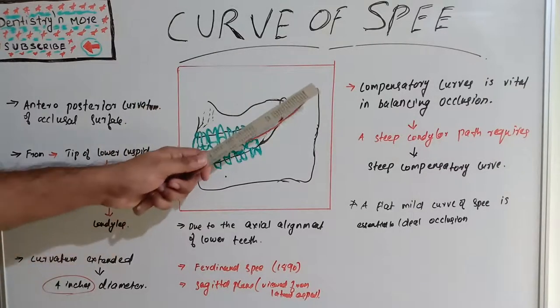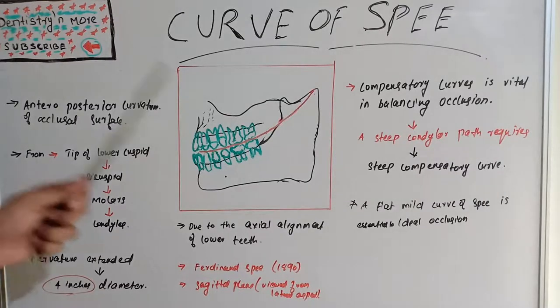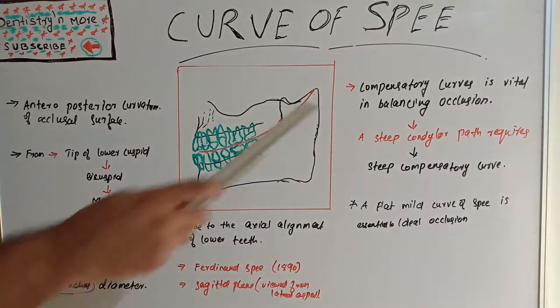This curve of spee is important in balancing occlusion in prosthodontics, orthodontics and restorative dentistry. It should avoid the Christiansen's phenomenon and it will be very deep in deep bite patients and the opposite will be seen in open bite patients. Creating an ideal or perfect curve of spee is very important in managing or creating a balanced occlusion.